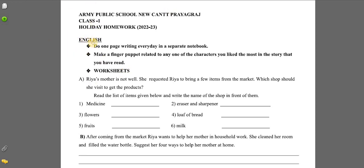First, for English: do one page of writing every day in a separate notebook. If you already have a writing notebook maintained at home, you are going to write one page of English writing daily. For the second point, you have to read a storybook. After reading the storybook, choose one character you liked the most and make a finger puppet based on that character.